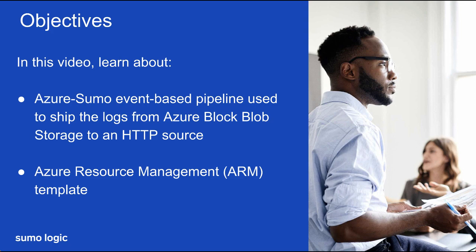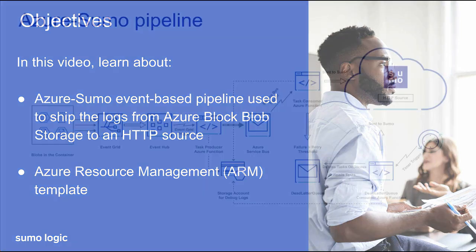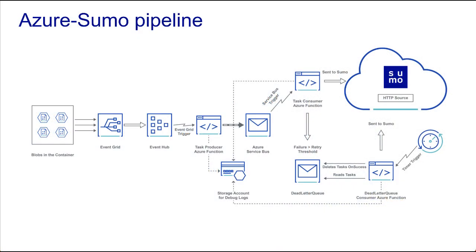Sumo Logic has created an Azure-to-Sumo pipeline for Azure log collection from Azure Blob Storage. The available logs from Azure Block Blob Storage are shipped to an event hub, then on to an Azure function, and finally to an HTTP source on a hosted collector in Sumo Logic. Let's look at the individual components of the pipeline.